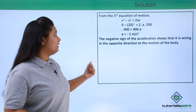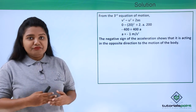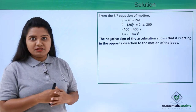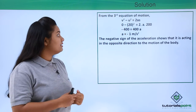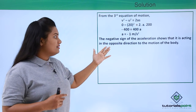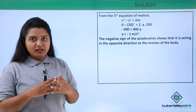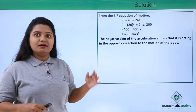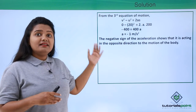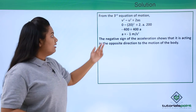The acceleration is found to be negative. A negative value means that the physical quantity is acting in the opposite direction of motion. Here, the acceleration of −1 m/s² means it is acting opposite to the car's motion, which is why the car has come to a stop. This kind of acceleration is called retardation or deceleration.